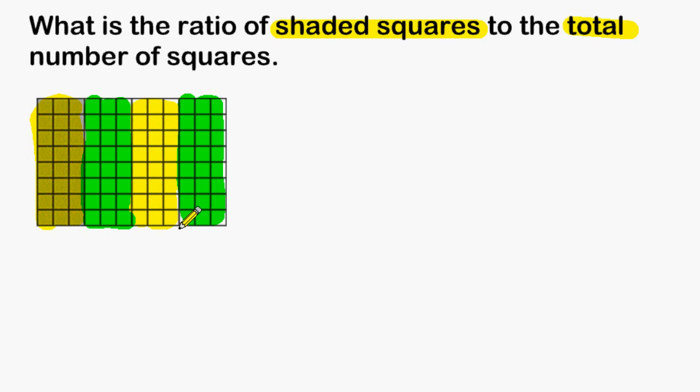Now notice the ratio is asking for shaded squares to the total number of squares. We can see that out of these four parts, one of the sections is shaded.